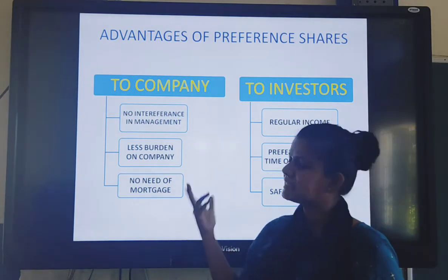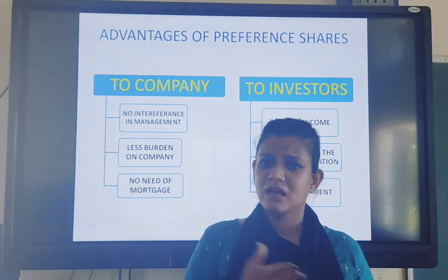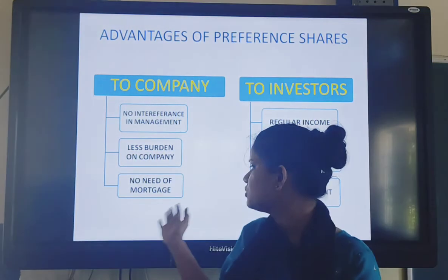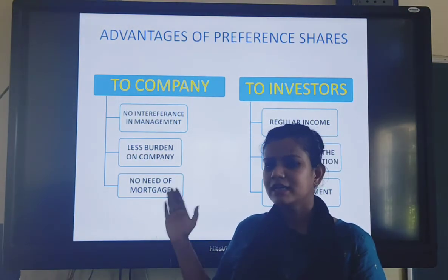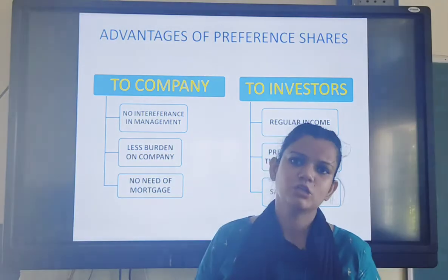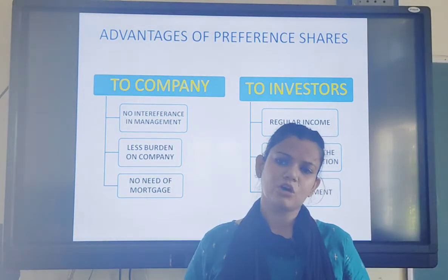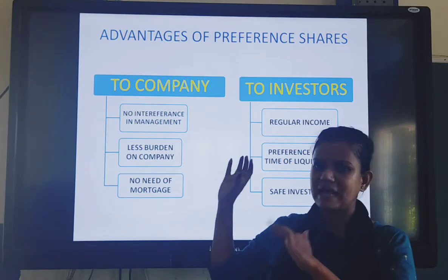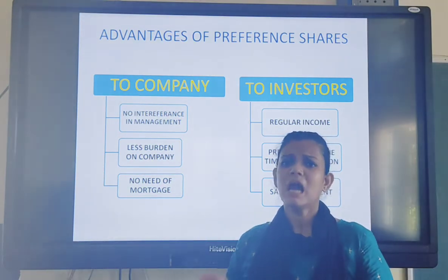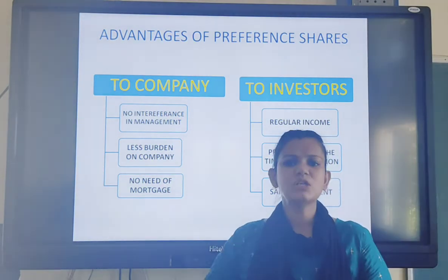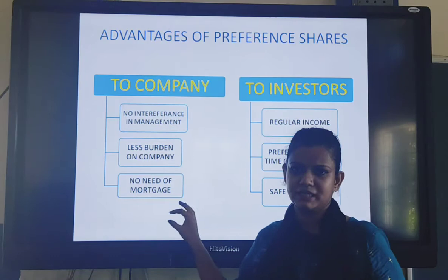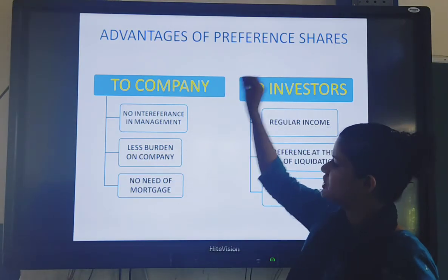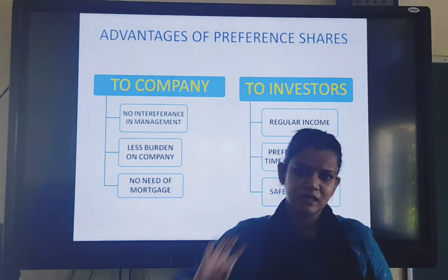The third advantage to the company is no need of mortgage or security. Just as in equity shares there is no need to provide security or mortgage - unlike when taking a loan where security must be provided - similarly with preference shares, money comes in from the public but the company does not need to give any security or mortgage. Therefore, no need of mortgage is also an advantage of preference shares to the company.